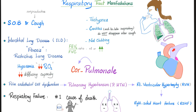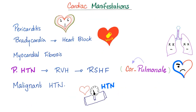Pulmonary endothelial dysfunction can also cause pulmonary hypertension, leading to right ventricular hypertrophy and right-sided heart failure. The most common cause of death in scleroderma patients is respiratory failure. Cardiac problems include pericarditis, bradycardia, heart block (AV nodal block), myocardial fibrosis, pulmonary hypertension causing right ventricular hypertrophy and right-sided heart failure — hashtag cor pulmonale. Don't forget malignant hypertension.